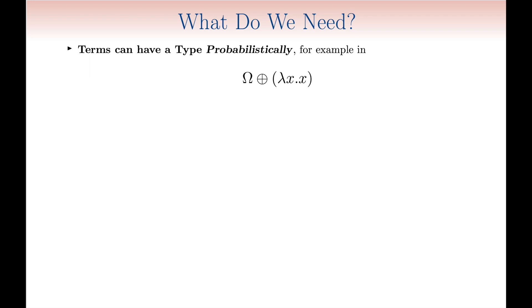How could we make intersection types capable of capturing probabilistic termination? First of all, we have to handle those situations in which terms reduce to values having a certain type, but only with a certain probability. For example, this term reduces to the identity, but only half of the types.